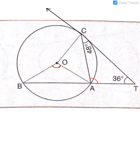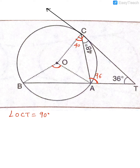First, find this angle using the sum of angles in a triangle = 180°: 48 + 36 subtracted from 180 gives 96°. Next, angle OCT = 90° because radius is perpendicular to tangent. So the remaining angle = 90 − 48 = 42°.